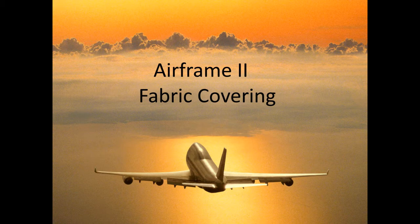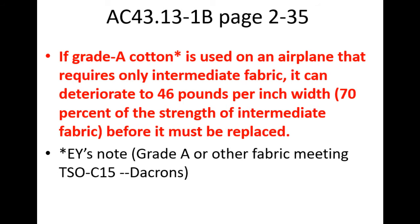The minimum tensile strength for deteriorated intermediate fabric is 70 percent of the new fabric strength. So 70 percent of the original 65 pounds per inch is 46 pounds per inch — that is the minimum tensile strength for intermediate fabric.